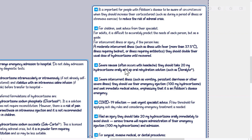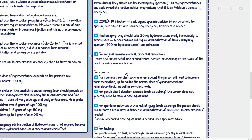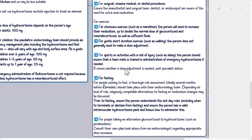For injury, take 20 mg hydrocortisone orally immediately to avoid shock; serious trauma requires the emergency injection of 100 mg hydrocortisone and admission. For surgical, invasive medical, or dental procedures, ensure the anesthetist, surgical team, dentist, or endoscopist are aware of the need for extra oral medication. For strenuous exercise such as a marathon, the person will need to increase medication up to double the normal dose of glucocorticoid and mineralocorticoid, as well as sufficient fluids. For gentle short-duration exercise such as walking, dose adjustment is generally not needed. For sports with a risk of injury such as skiing, ensure a teammate is trained in administration of emergency hydrocortisone.